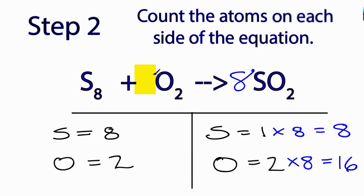I can change the coefficient here to eight, because eight times two equals 16. So now I have eight sulfurs on each side, and I have 16 oxygens on each side of the equation. This equation is balanced.